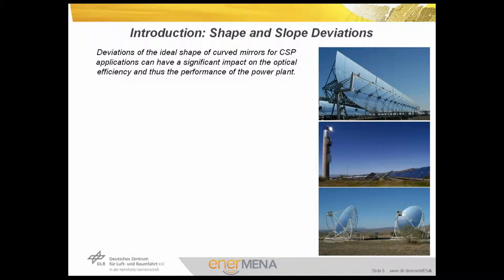We want to have an introduction to shape and slope deviation of CSP concentrators. In general, there are three different types of CSP concentrators: the parabolic trough, the solar power tower with heliostats, and as another point-focusing application, the parabolic dish.